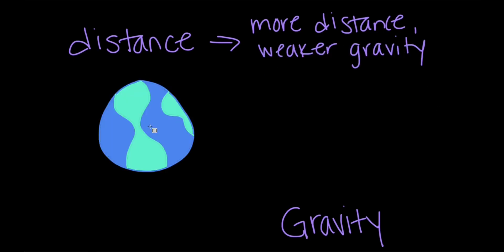For example, if there is a ball on top of Mount Everest, the pull of Earth's gravity on it is actually slightly less than the pull of gravity on that same ball at sea level, because the top of the mountain is farther away from the center of the Earth.